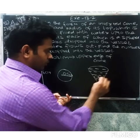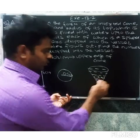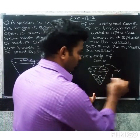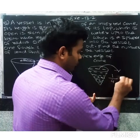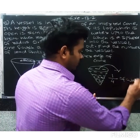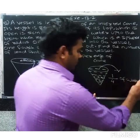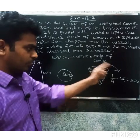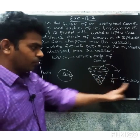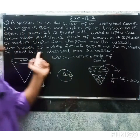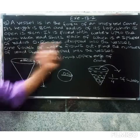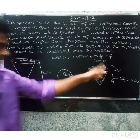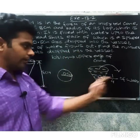The lead shots cause one-fourth of the water to flow out. We need to find the number of lead shots dropped into the vessel — we drop lead shots until one-fourth of the water flows out.